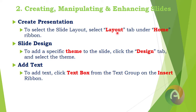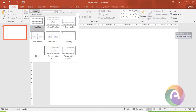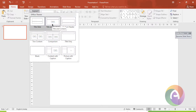First, create a blank presentation. To select the slide layout, select the Layout tab under the Home ribbon. In the layout menu, there are multiple layout options including Title Slide, Title Content, Two Content, Comparison, Title Only, and Blank. In the Title layout, we will display the title and the content.